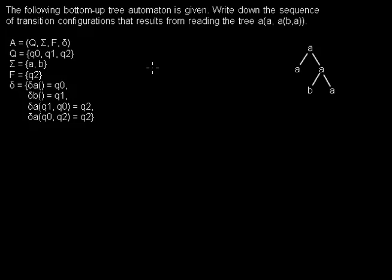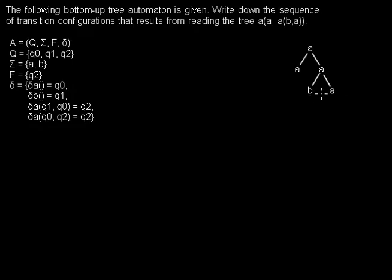I want to show you how a bottom-up tree automaton reads a tree. The bottom-up tree automaton starts at the root of the tree, then moves all the way down to the children, and then starts reading the tree from the children back to the top.